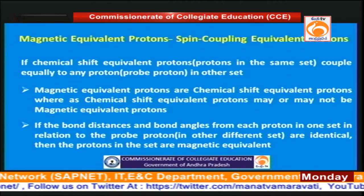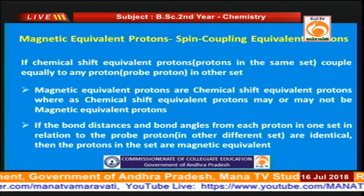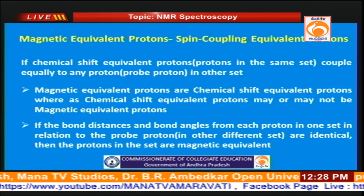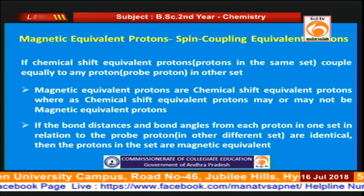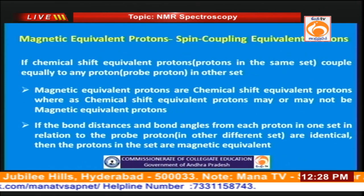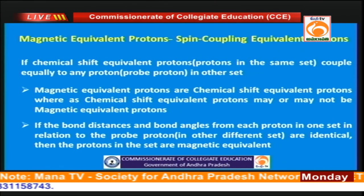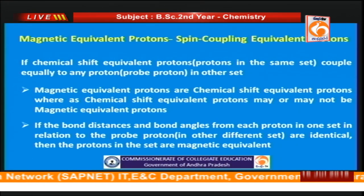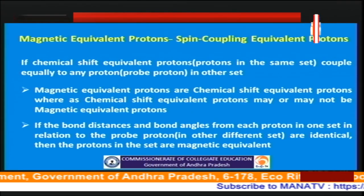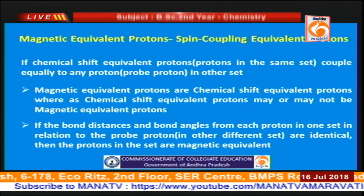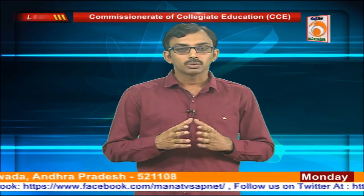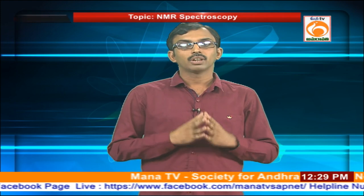Now let us go to the concept of magnetic equivalent protons, also known as spin coupling equivalent protons. If the same chemical shift equivalent protons — protons in the same set — undergo coupling equally to any other proton in any other set, then we say there is magnetic equivalence. Magnetic equivalent protons are a subset of chemical equivalent protons, whereas chemical equivalent protons may or may not be magnetically equivalent. Magnetic equivalence can be determined by using bond relationships — determining the bond distances and bond angles between the proton of interest and protons having the same chemical shift value. If the bond distances and bond angles are the same, the protons in the same set are magnetically equivalent and will not undergo coupling with one another.